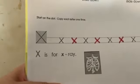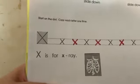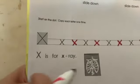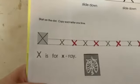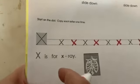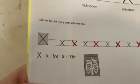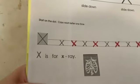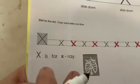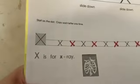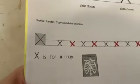X is for X-ray. Have you ever had an X-ray? This is an X-ray of your ribs and your spine. It's where they can take pictures and see inside your body. X-ray! Good job!